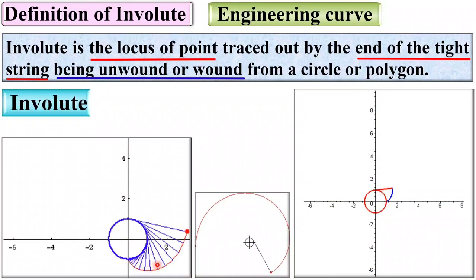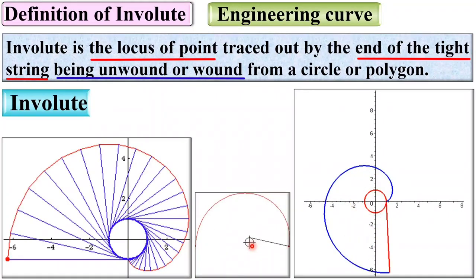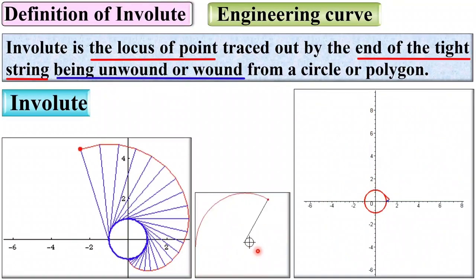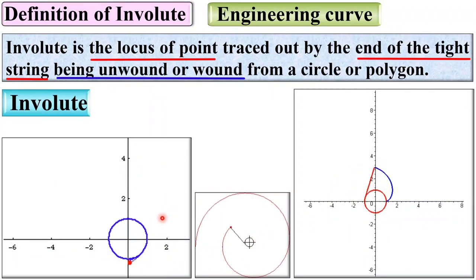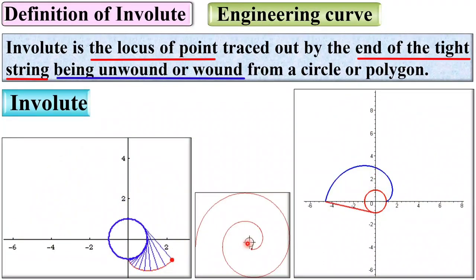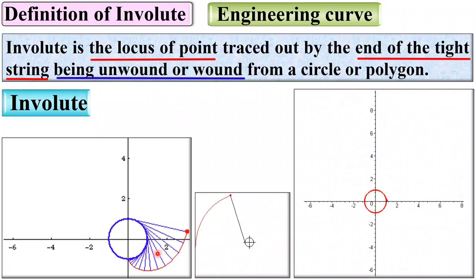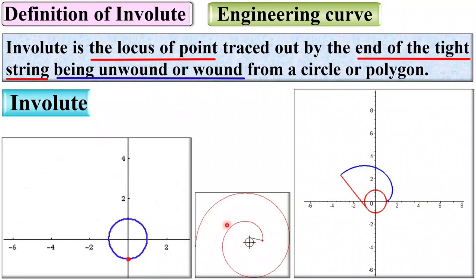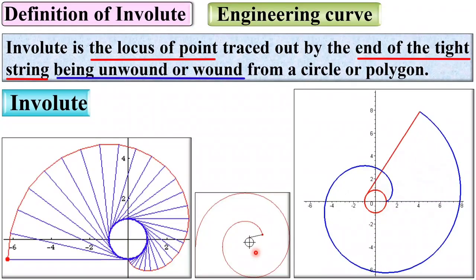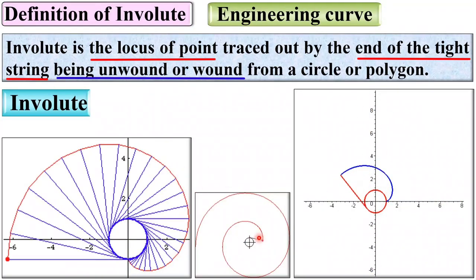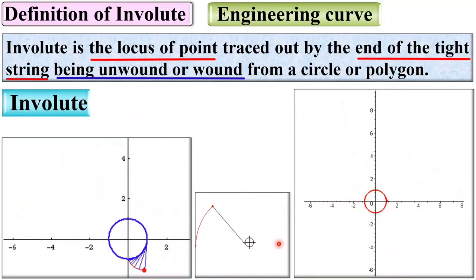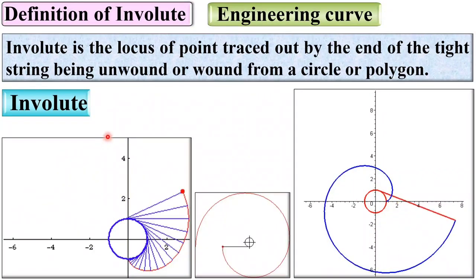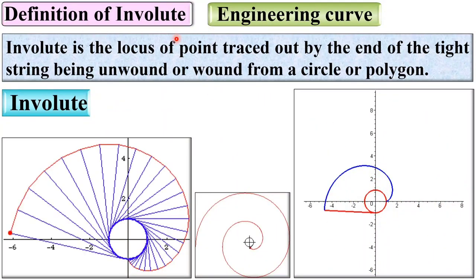Here the string is being unwound. In this figure, the rotation of the string is more than one revolution. In this case, the string is being wound on the circumference of this circle. In the first figure it is only one revolution, and in the second case it is more than one revolution. So it can be one revolution, more than one revolution, half revolution, or even a quarter revolution. This is the simple concept of the involute of a circle.